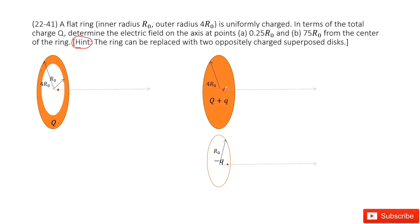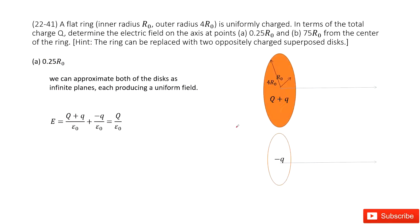Can you find the electric field for this disk at this location 0.25 r0? We can consider this as an electric field just above an infinite plane. So we can write the electric field as E = (Q + q)/(ε0) from the first disk, and the second disk gives us the term -q/(ε0).